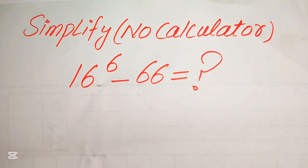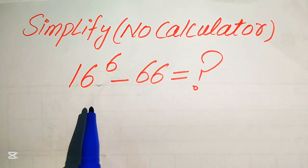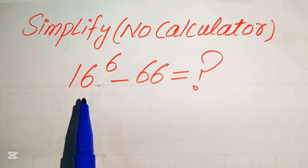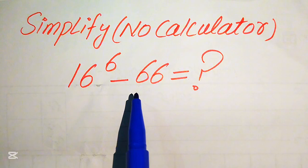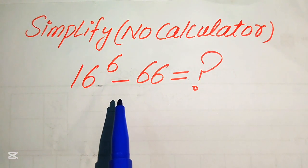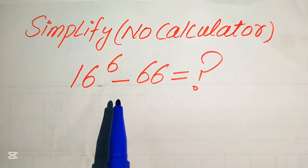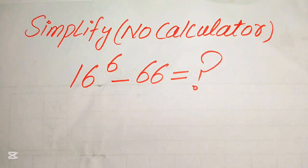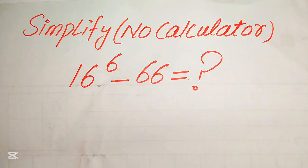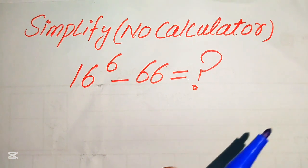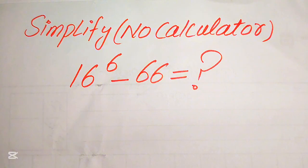Hello everyone, today I want to show you how to simplify this algebraic expression without using a calculator. We have 16 to the power of 6 minus 66, and we need to write this into simplified form. Remember, the calculator is not allowed, so we need to show all of the working on paper. If you have any other method in mind, please don't hesitate to write it in the comment section.